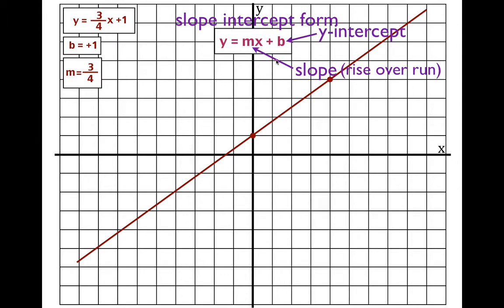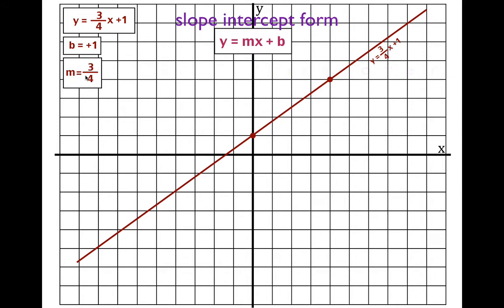Let's review. Use the y-intercept — put a point there. Use the slope, three-fourths — rise three, run four — to get the second point. You need two points to graph a line. The y-intercept and the slope will allow you to get those two points. The first line we did is y equals three-fourths x plus one.